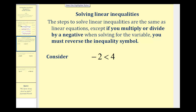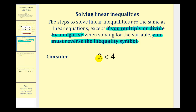The steps for solving an inequality are exactly the same as solving linear equations, except if we multiply or divide by a negative when solving for the variable, we must reverse the inequality symbol. To justify this extra rule, here we have negative two is less than positive four. We know this is true because negative numbers are always less than positive numbers.